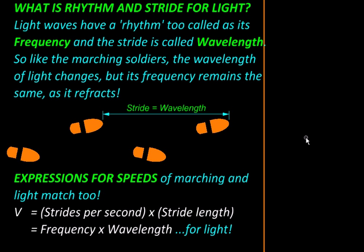In fact, this analogy of frequency equals rhythm and wavelength equals stride also applies to the expressions for speed. For example, speed of marching will be the number of strides a person takes per unit time multiplied by the length of each stride, while in the case of light the expression is frequency multiplied by wavelength, which exactly matches the analogy that we were talking about so far.